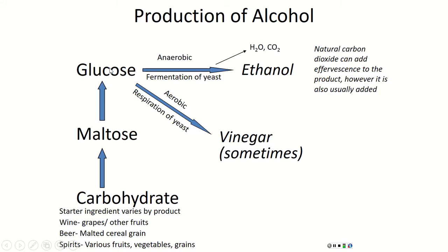Alcohol is made through an anaerobic process called fermentation. Going back to Chapter 4 — carbohydrates, typically maltose (a diglucose molecule), are fermented into ethanol when no oxygen is allowed in the process. If oxygen does get into the fermentation process, vinegar forms instead. That's why sometimes when you open a bottle of wine or another product and it smells or tastes vinegary, oxygen got in during fermentation — turning it to acetic acid rather than ethanol.